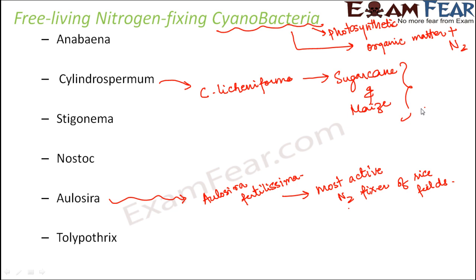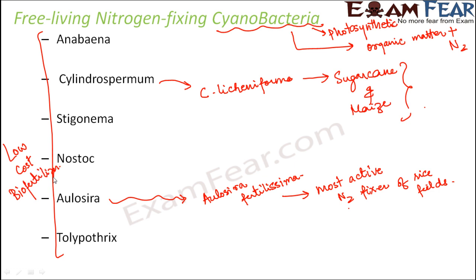These are the free living nitrogen fixing cyanobacteria. Their advantages are: they reduce the cost of fertilizers, and in fact they themselves act as low cost bio-fertilizers. Since they enrich the soil with organic matter plus nitrogen, they also add nutrients like phosphate and potassium into the soil. So there are multiple advantages of free living nitrogen fixing cyanobacteria.